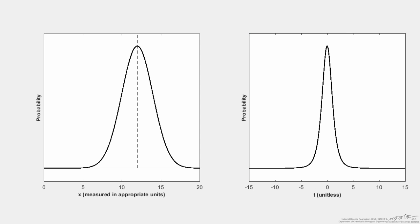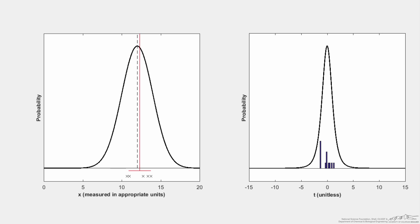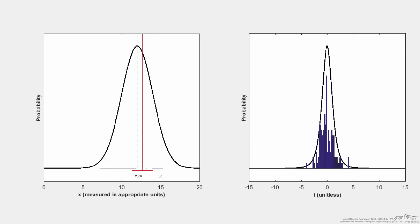In reality you'll probably collect more than two measurements. Three to five would be more typical. Running the simulation with five measurements, I calculate a sample mean just shy of the population mean and compute t. Note that I'm now showing the t-distribution with n minus 1, or four degrees of freedom. The tails come in a little bit, because with more measurements per sample the sample standard deviation tends to be closer to the population standard deviation. Continuing to run it, my histogram approaches the t-distribution with four degrees of freedom.